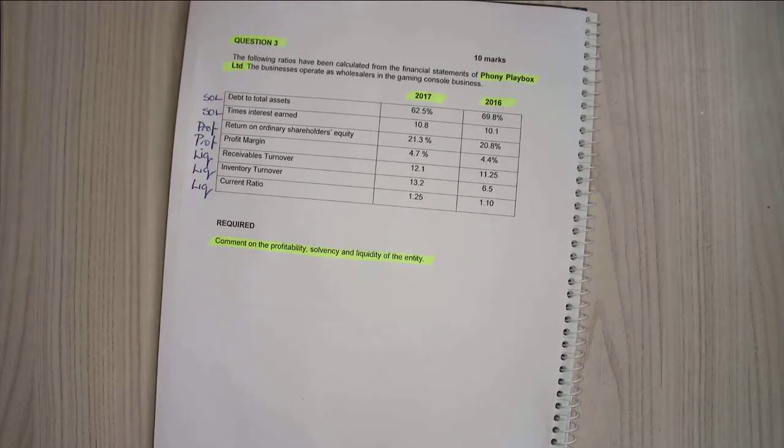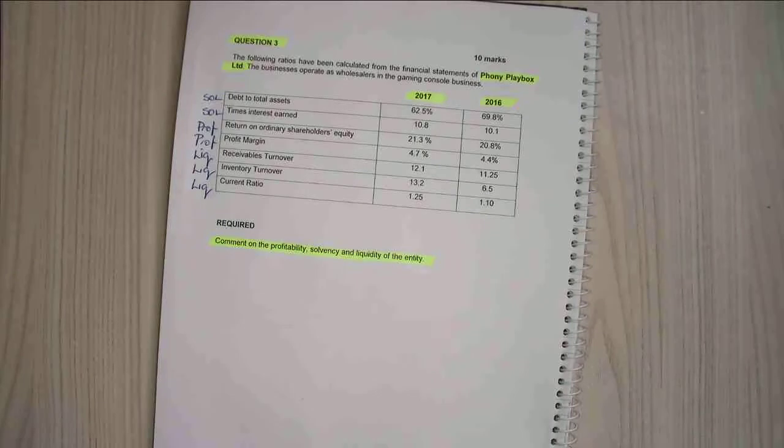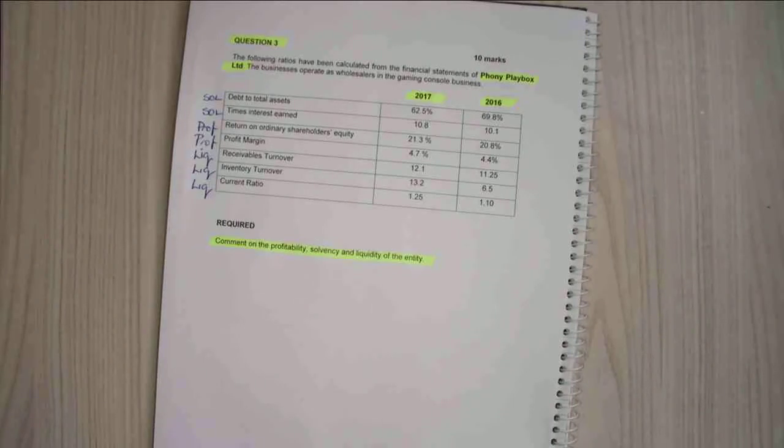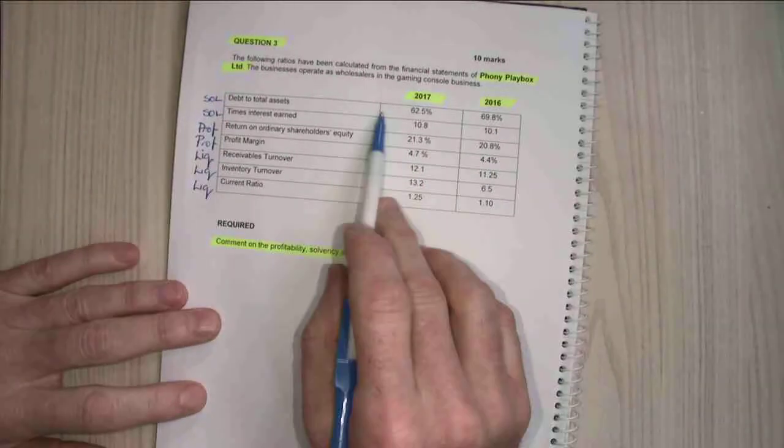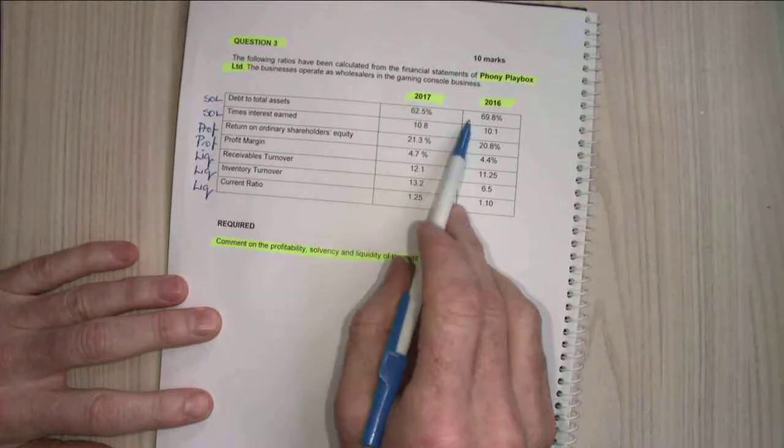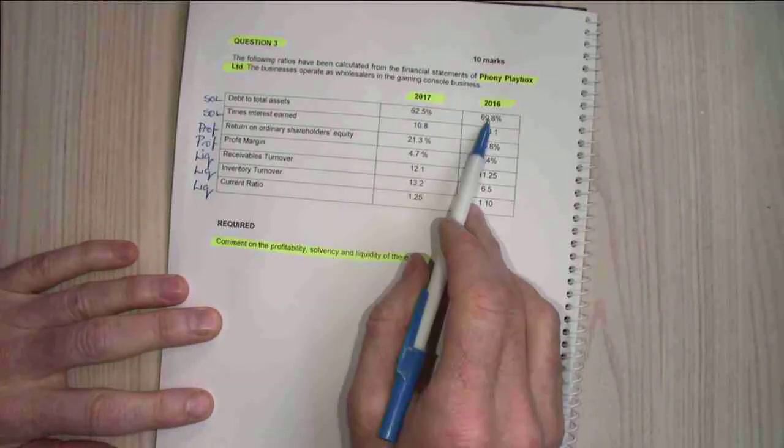Alright, now the next piece of analysis I'm going to do is I'm going to try and determine which one of these is better. My debt to total assets, which one's better, 16 or 17?